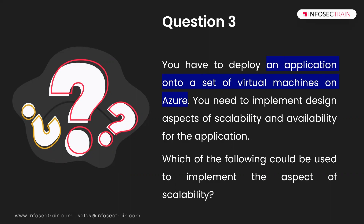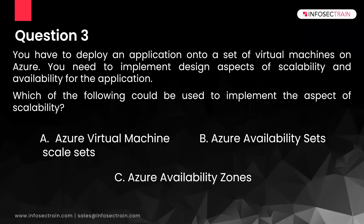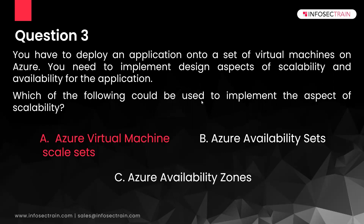You have to maintain the aspect of scalability. Azure Availability Sets and Azure Availability Zones help with availability, but not scalability. Scalability in this scenario is handled by Azure Virtual Machine Scale Set, where you can define rules so that if a particular VM is under too much stress — too much processing or traffic — you can automatically deploy another instance. The answer for question three is option A — Azure Virtual Machine Scale Set.